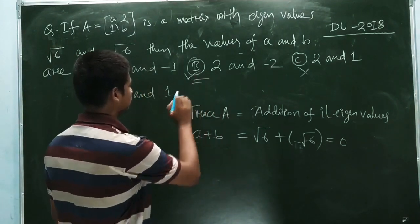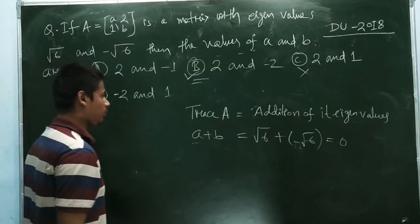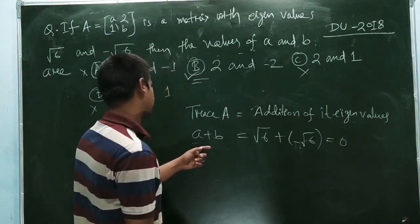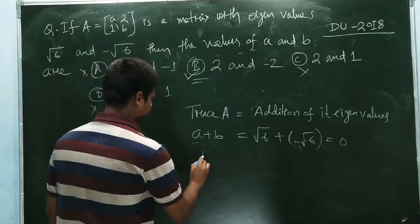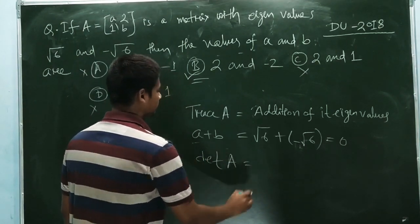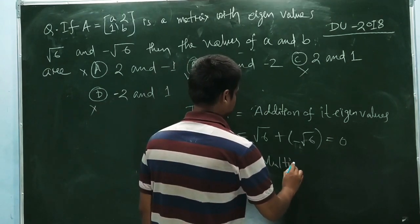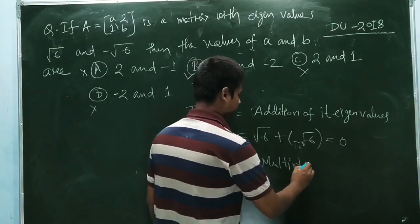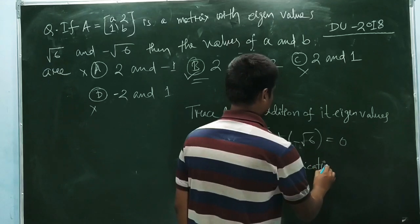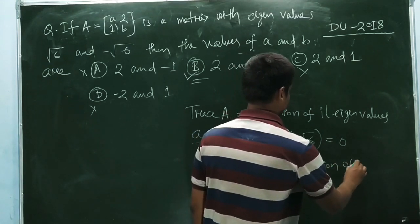So from here we get the solution. But if you actually want to find a and b, then see: determinant of A is nothing but multiplication of its eigenvalues.